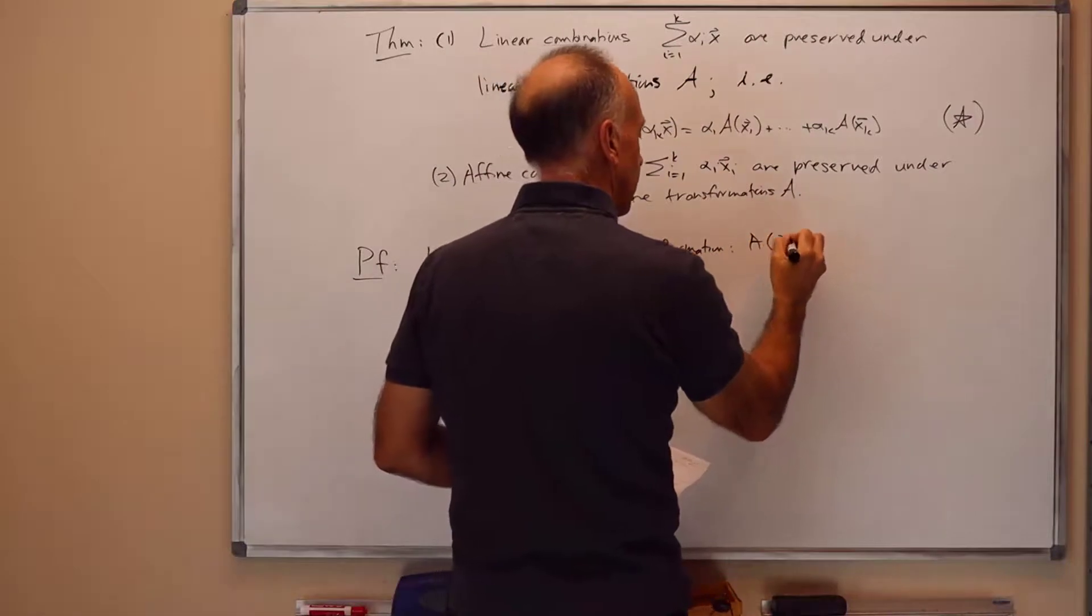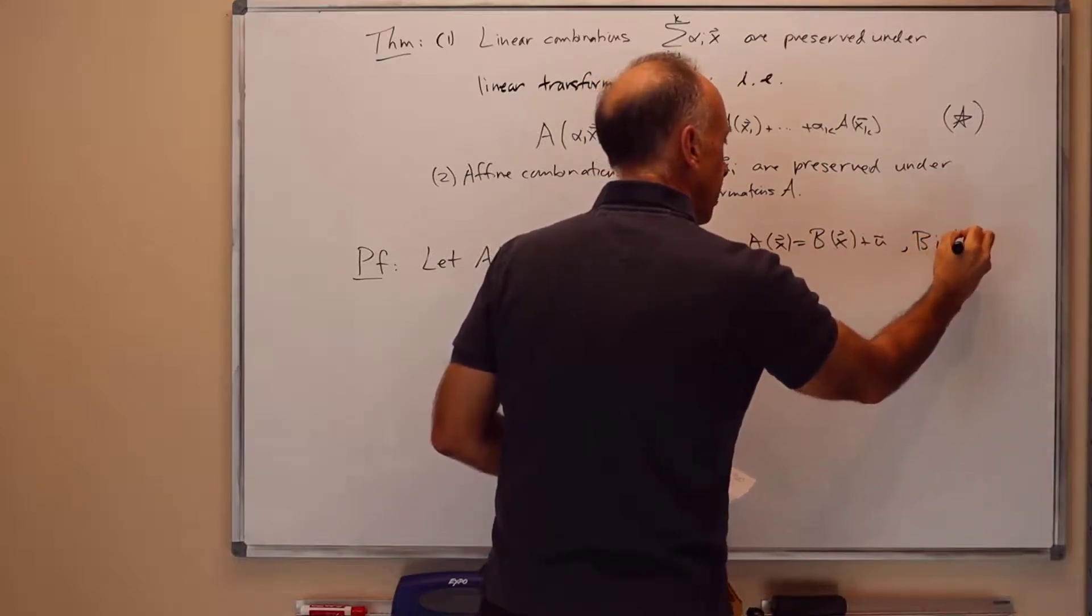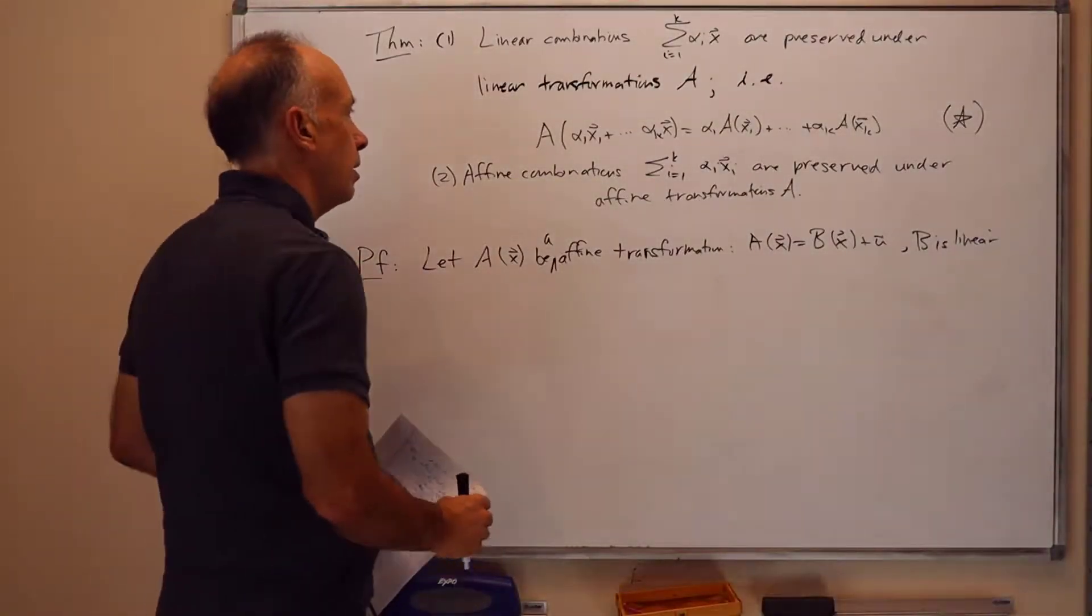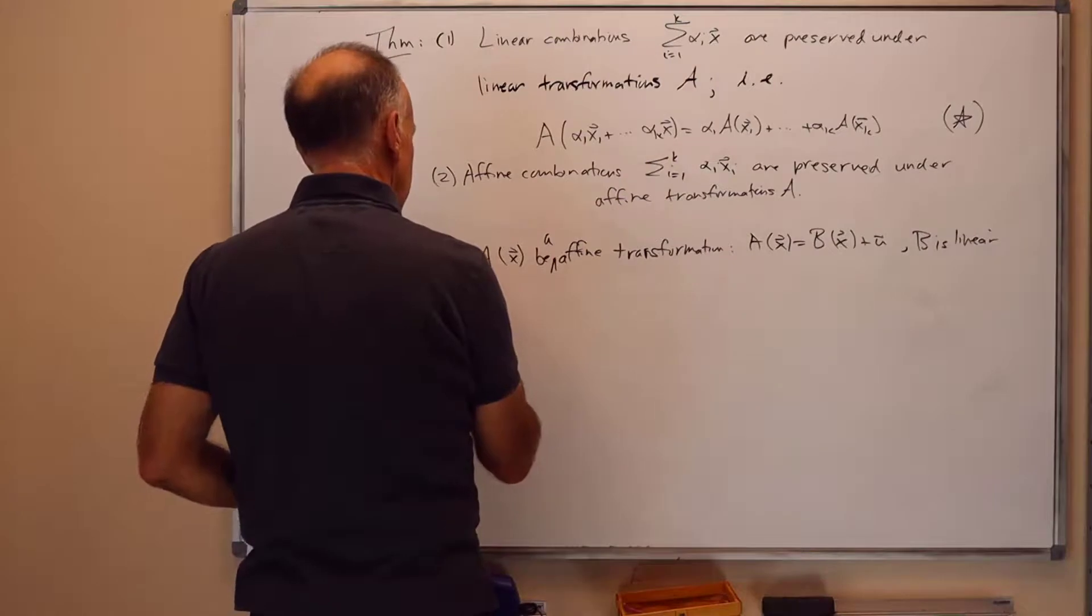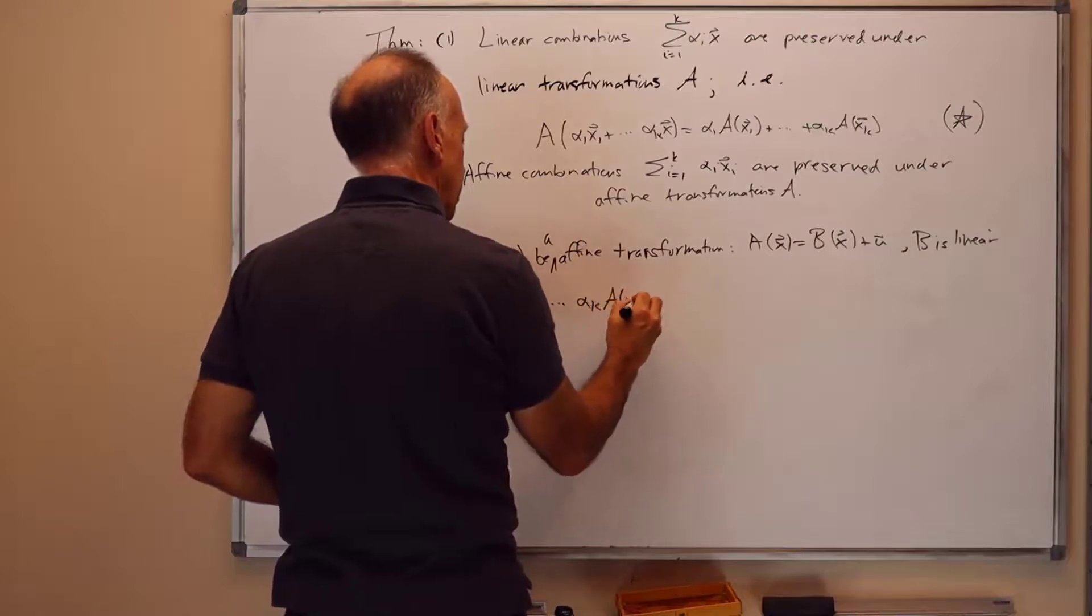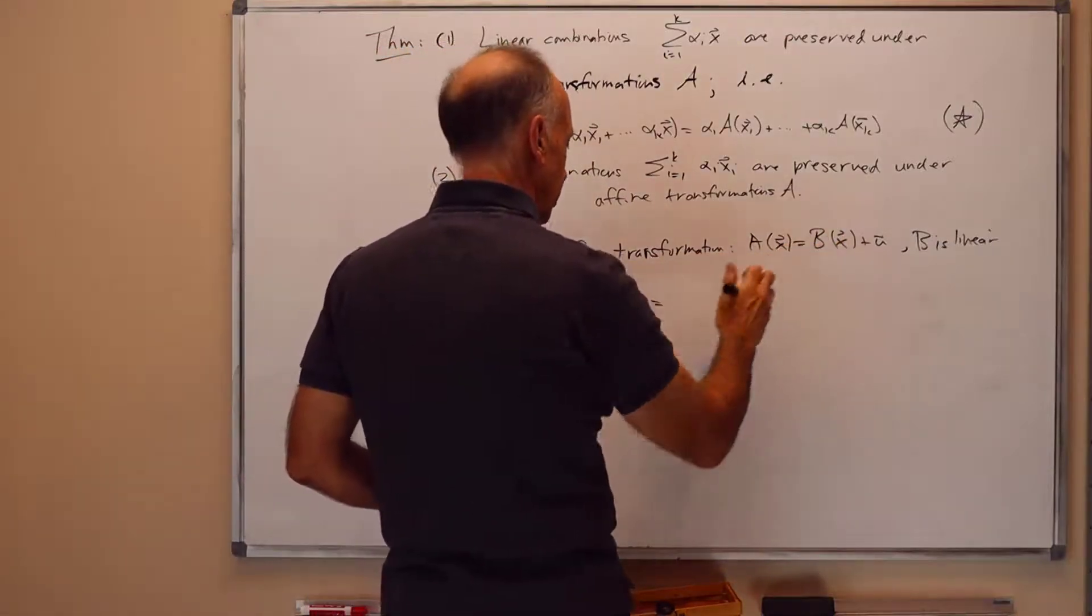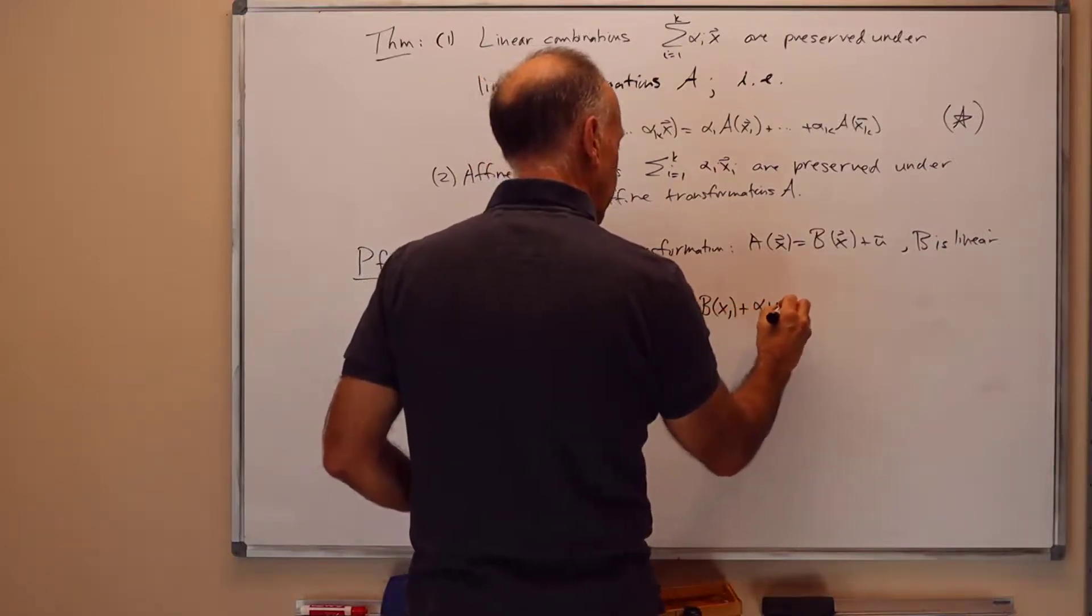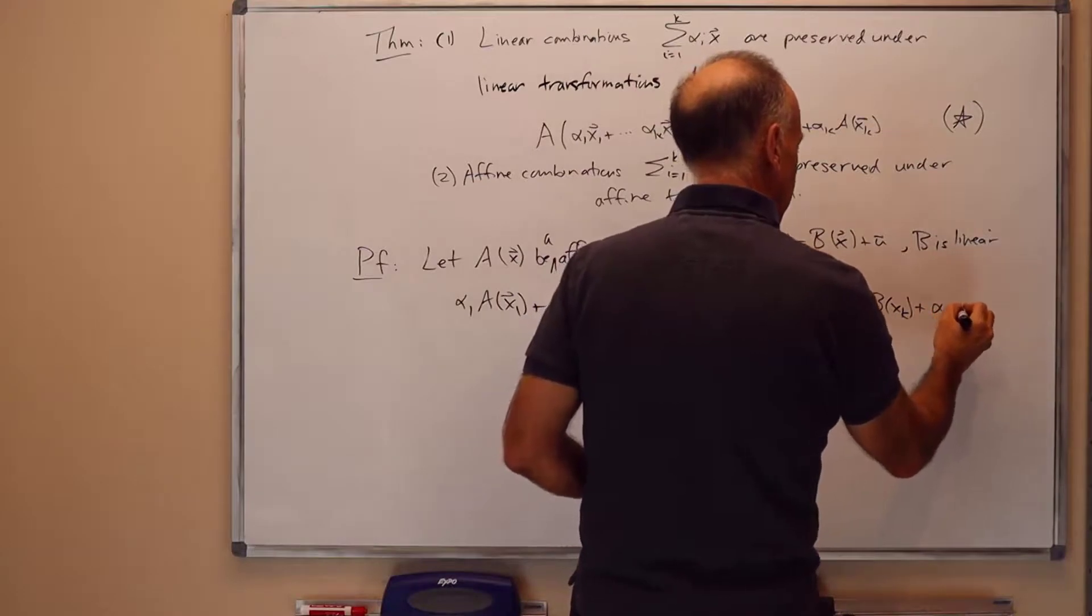We need to prove that star holds here, that these two things are equal. So let's start with the right hand side: alpha 1 A of x1 plus dot dot dot alpha k A of xk. That's equal to, by the definition of A in terms of B and u, alpha 1 B of x1 plus alpha 1 u plus dot dot dot alpha k B of xk plus alpha k u.